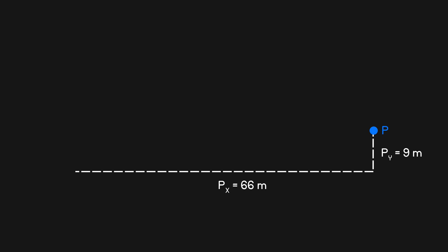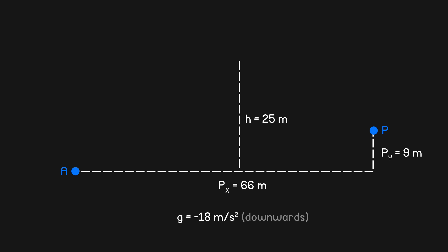Here's the exact problem we'll be solving. P is a point that lies 66m to the right of, and 9m up from, point A. G, the acceleration due to gravity, is negative 18m per second squared downwards. If an object is launched from point A such that it reaches a maximum vertical displacement of 25m and passes through point P, calculate the initial velocity with which the object was launched.